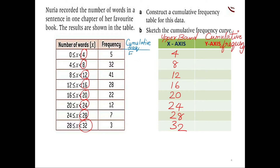The first frequency in the cumulative frequency table remains the same — it's 5, so you just write the same value. The next value will be 5 plus 32 giving you 37. The next term will be 37 plus 41 giving you 78, and the next term again 78 plus 28 giving you 106.